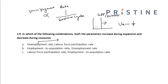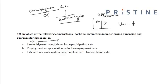During economic recession, if the GDP shifts to the left, the unemployment rate will increase because many people will lose their jobs. So the unemployment rate decreases during expansion and increases during recession.